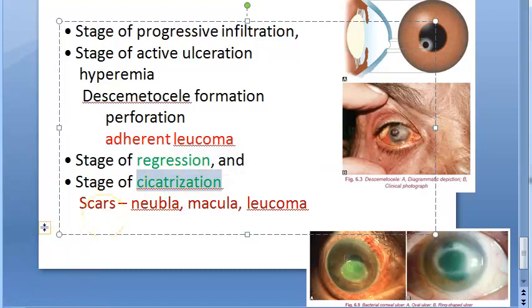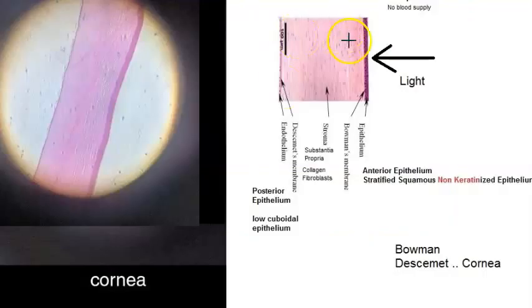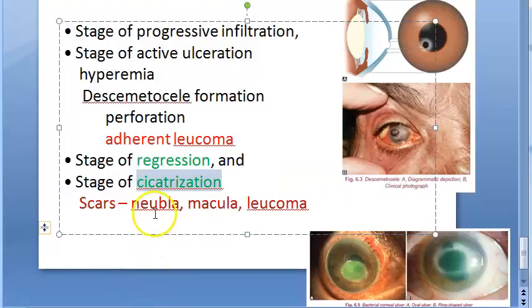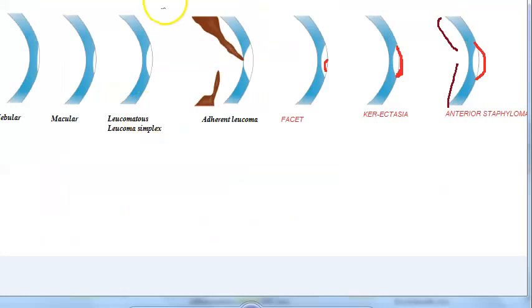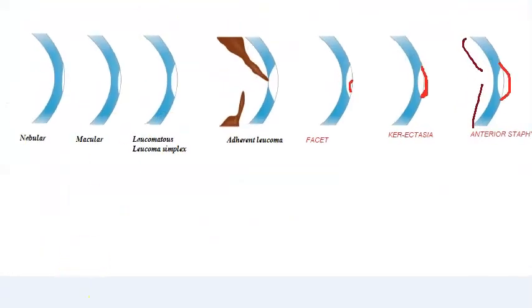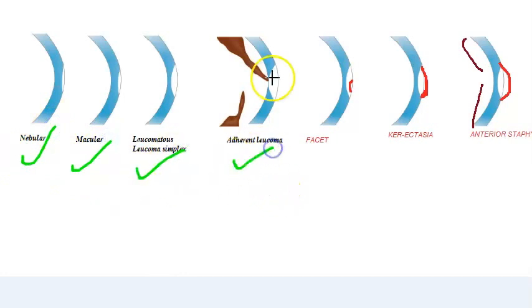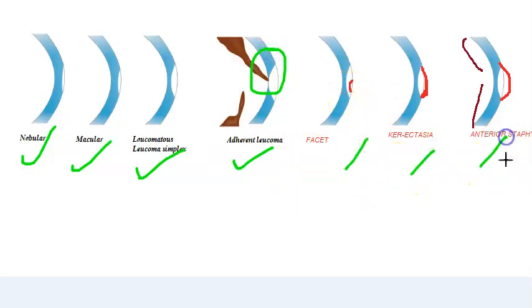If just the epithelium is involved, it will heal well. But if Bowman's membrane or superficial stroma are involved, some scarring can remain — nebula, macula, leucoma simplex, adherent leucoma where the iris is adherent to the cornea. You will also learn about facet, keratectasia, and anterior staphyloma.